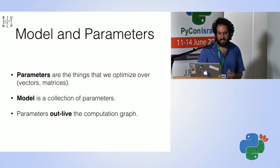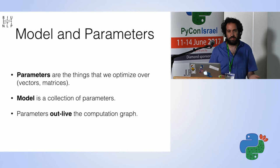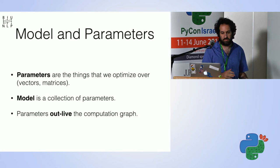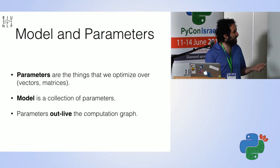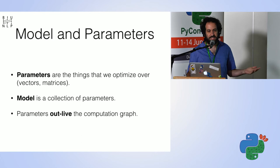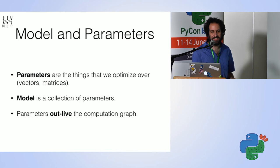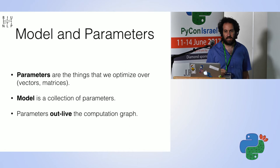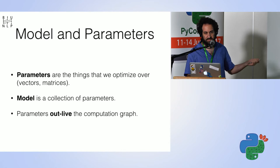In deep networks, we want to train models, so we need parameters. Parameters are vectors or matrices that we optimize over. The model is a collection of these parameters — in the upcoming version it will be called param_collection, which may be a better name. You get parameters from the model by asking it, and you train a model by updating its parameters. These parameters outlive the graph, so when you create a new graph, expressions die but parameters persist in the background with the same values.